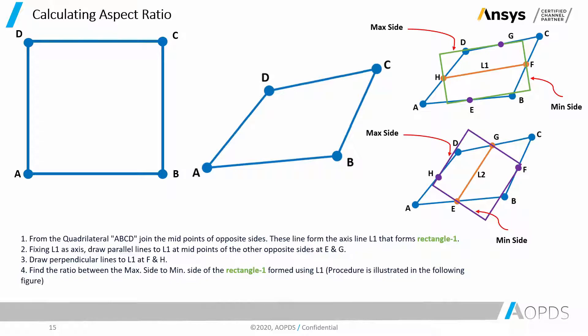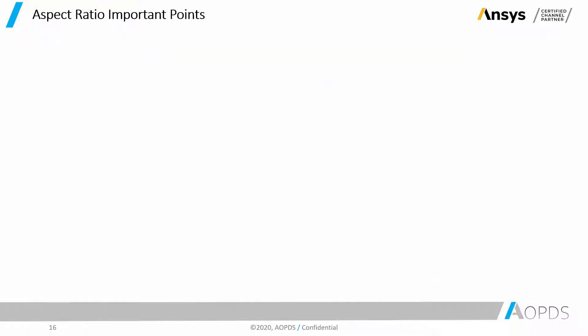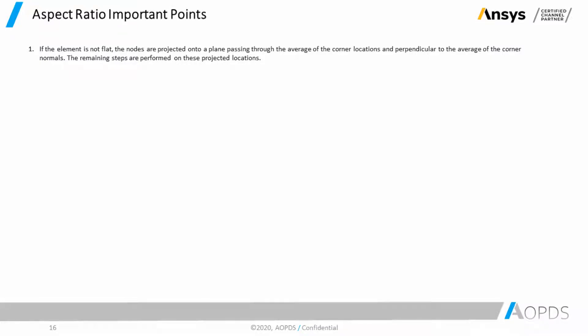Now, let's talk about some important points. Point number one. If the element is not flat, the nodes are projected onto a plane passing through the average of the corner locations and perpendicular to the average of the corner normals. The remaining steps are performed on these projected locations. Meaning that if an element is not flat, the warping angle and warping factor is not zero. So, we need to find the average of the corner locations and perpendicular to the average of the corner normals and then apply the same steps that we talked about in the previous slide and find the aspect ratio.